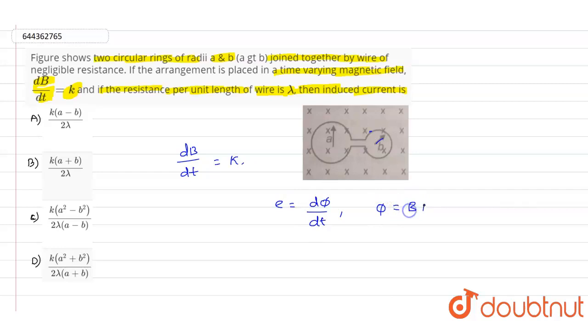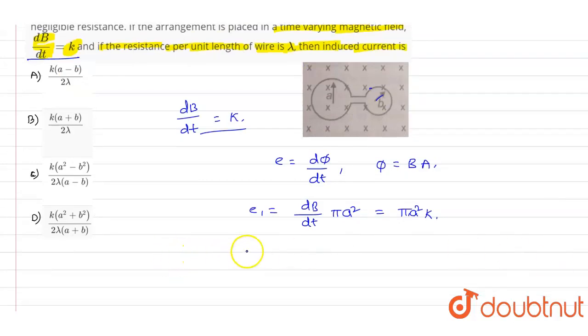divided by dt times πa². This equals πa²k, since dB/dt equals k. This is the value of ε₁. The ε₂ value can be